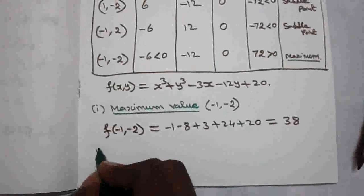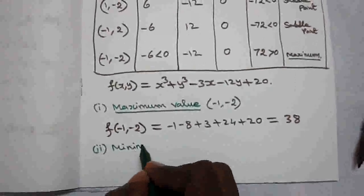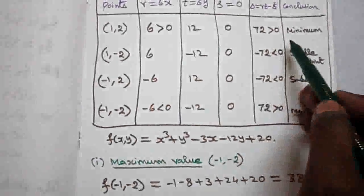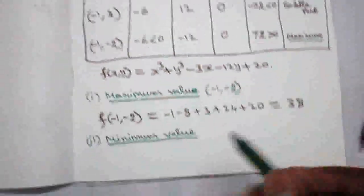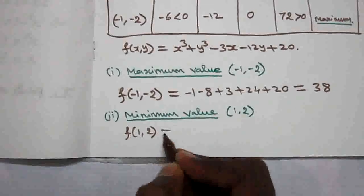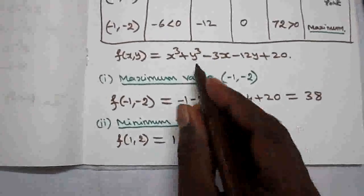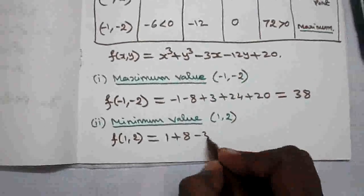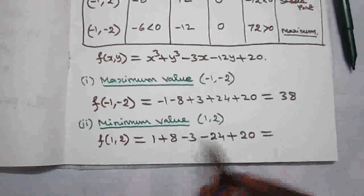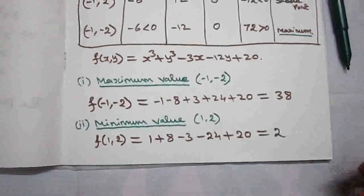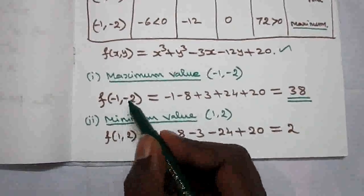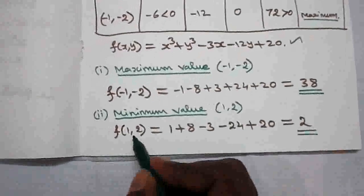For the minimum value, substitute point (1, 2): f(1, 2) = 1³ + 2³ − 3(1) − 12(2) + 20 = 1 + 8 − 3 − 24 + 20 = 2. So the minimum value is 2. Therefore, for f(x, y) = x³ + y³ − 3x − 12y + 20, the maximum value is 38 at (−1, −2) and the minimum value is 2 at (1, 2).